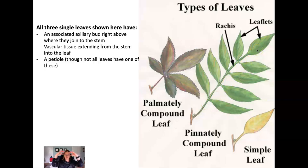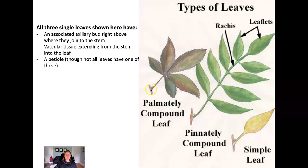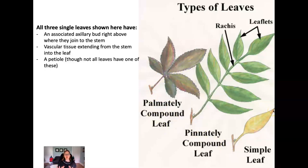Many fern leaves are pinnately compound, arranged in a two-dimensional way down the rachis. Palmately compound is easy to remember if you think of your hand — all leaflets attach at a single point, like a buckeye leaf with five leaflets. You can tell this is a petiole and this is the stem because there is an axillary bud where the leaf meets the stem. The leaflets have no axillary meristem of their own. These together form a single leaf arranged in a palmate fashion, like fingers on a hand. All three leaf types have petioles, axillary buds, and vascular tissue moving from stem into leaf.